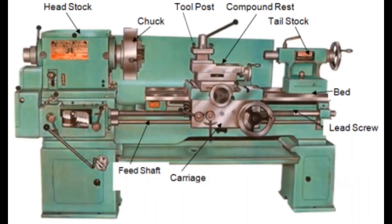As you can see, this is the lathe machine. We started on the left side — this is the headstock. The headstock is the main vital part. Just as the human body has a head, the head contains the brain. We control the brain, which controls movement.